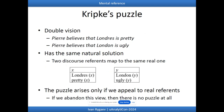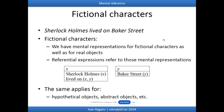Pierre's beliefs are not contradicting because he simply doesn't recognize that those two objects are the same. Kripke himself says in his paper that some people would not see any puzzle here — if you ask a layperson, they say there's no problem. The puzzle arises only if we appeal to real reference. If we abandon that view, there is no puzzle at all.